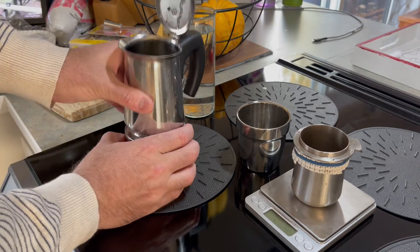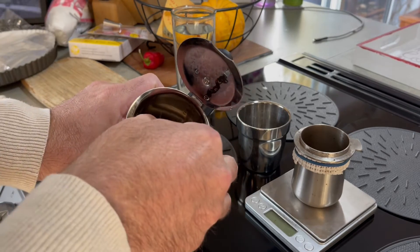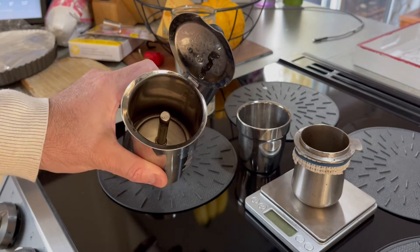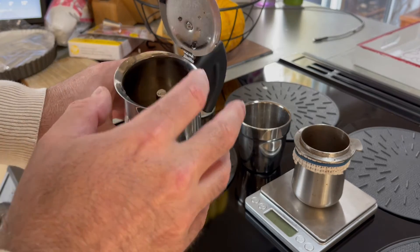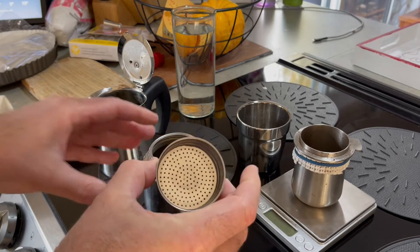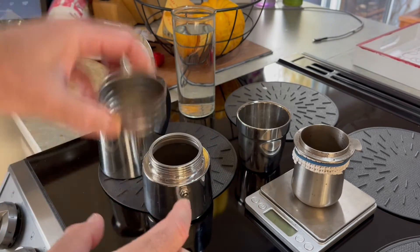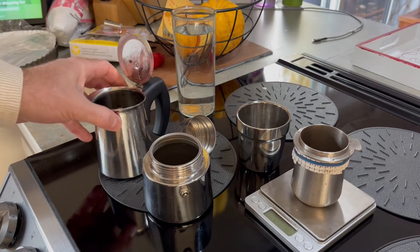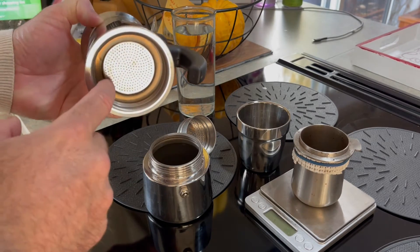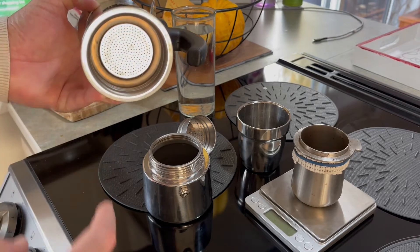Here's the bottom part - this is the filter basket where the water comes up. On the top chamber, there's a filter and a gasket on the inside, and that gasket's made out of silicone.